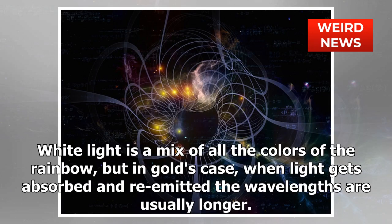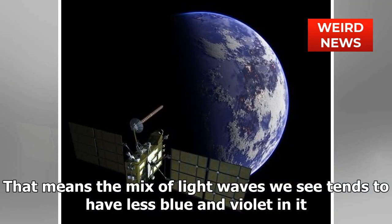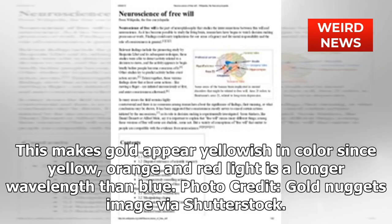Longer wavelengths of light mean that some of the visible light that would usually just be reflected gets absorbed instead — and that light is in the blue end of the spectrum. White light is a mix of all the colors of the rainbow, but in gold's case, when light gets absorbed and re-emitted the wavelengths are usually longer. That means the mix of light waves we see tends to have less blue and violet in it, which makes gold appear yellowish in color, since yellow, orange, and red light have longer wavelengths than blue.